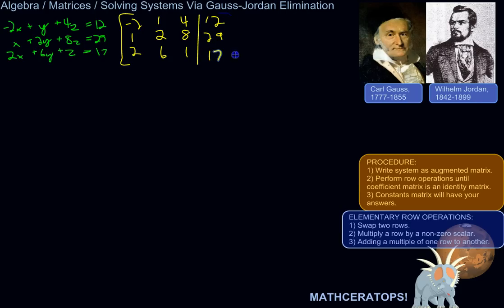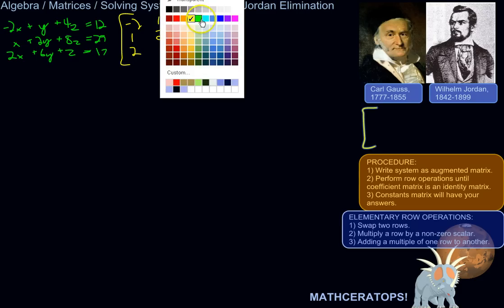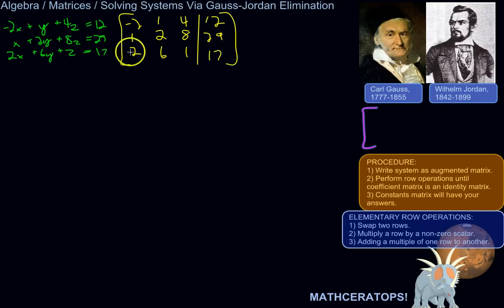The basic idea is we'll perform row operations until we get something that looks like this. The coefficient matrix here will simply be an identity matrix. The main diagonal is ones. And then whatever's left here will be the value of x, y, and z. So those will be our answers.